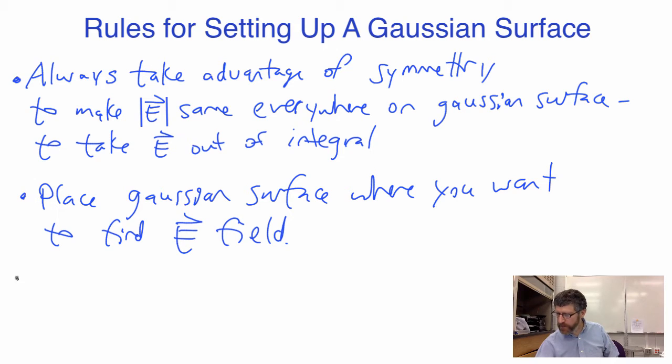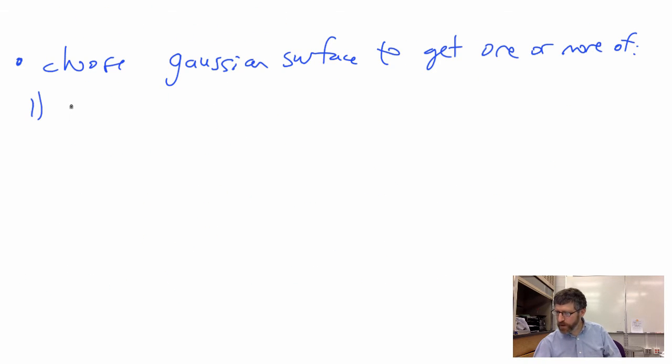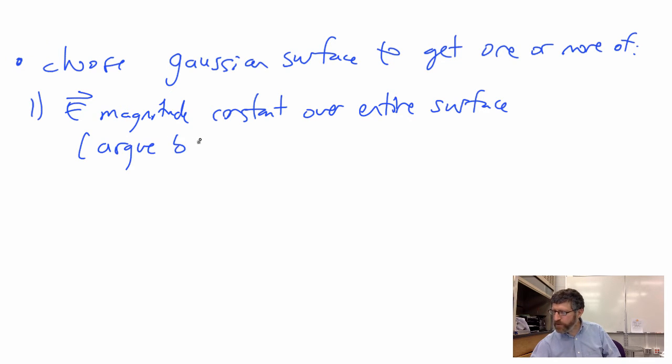And then you want to choose the Gaussian surface and what shape you're going to use so that you get one or more of the following. You want E magnitude constant over the surface. And then, so you typically argue by symmetry.